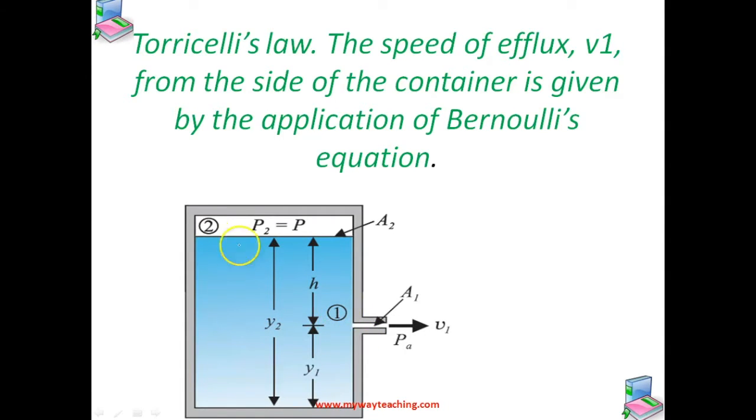The air above the liquid whose surface is at height y2 is at pressure p. From the equation of continuity, we can write v1 a1 equals v2 a2. So we can write v2 equals a1 by a2 into v1.